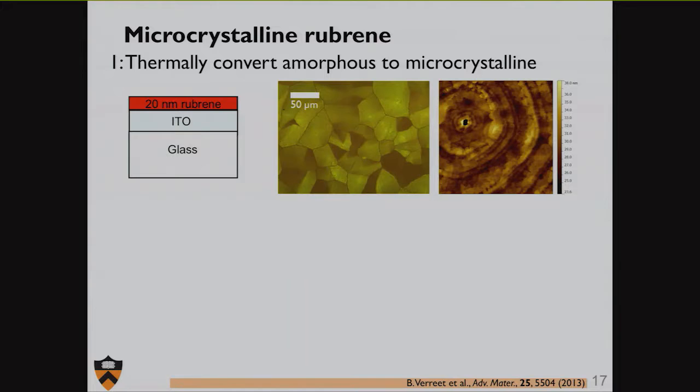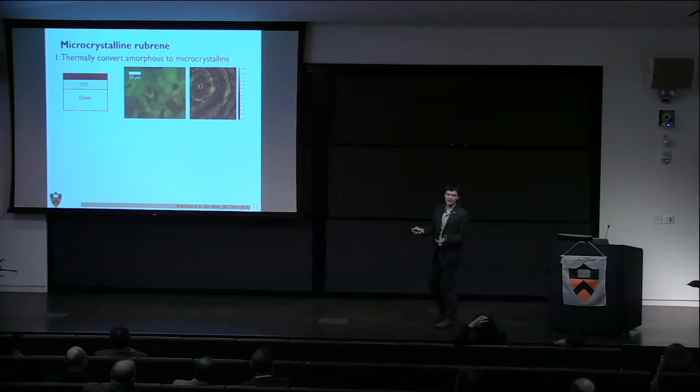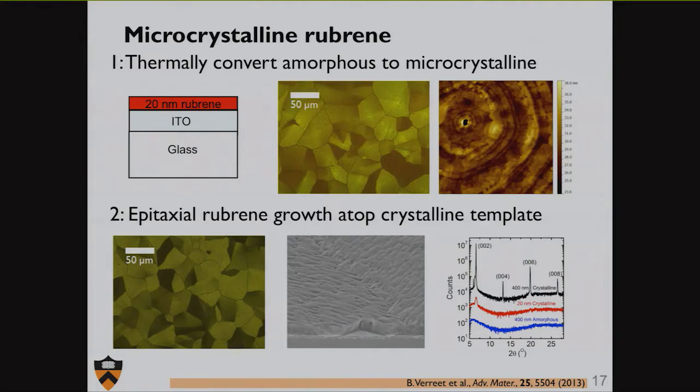It's actually quite simple. We just take an amorphous film of rubrene, stick it on a hot plate at the right temperature, in this case about 150 degrees Celsius, and we transform it to a film like that. Because this film is too thin to absorb much light, we stick it back in our vacuum chamber and take a page out of III-V semiconductors and perform epitaxy on that film. We evaporate more rubrene on top, and we can see that rubrene propagates that growth.